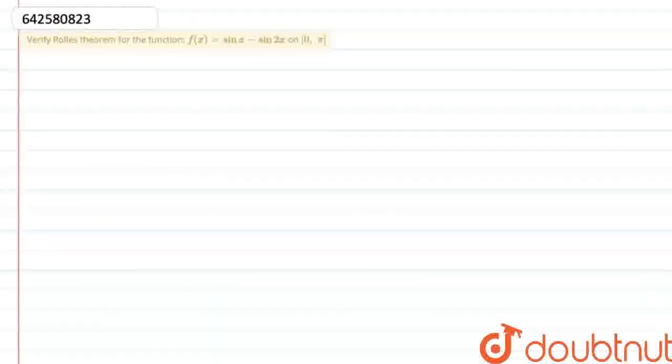Hello everyone, let's start the question. The question says, verify Rolle's Theorem for the function f of x equals sin x minus sin 2x on 0 to pi closed interval. We are given a function f of x defined as sin x minus sin 2x on the interval 0 to pi closed.